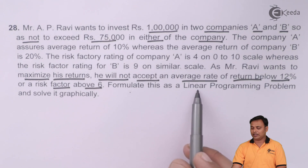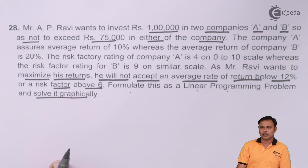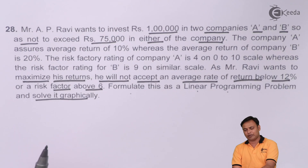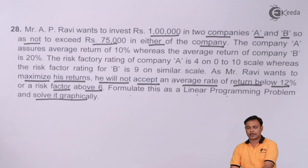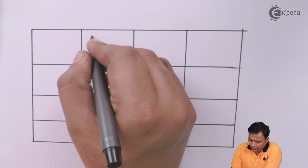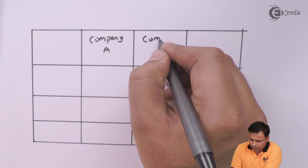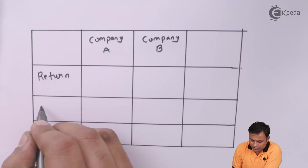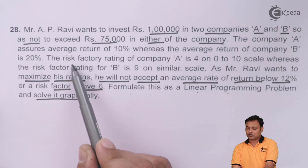We need to formulate this as a linear programming problem — solving it graphically is beyond the CMA Inter new syllabus 2016. Let's first tabulate the information into a table. We put the investment options for company A and company B in the columns.